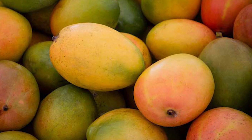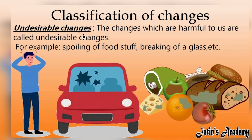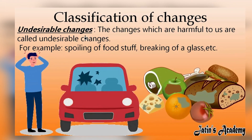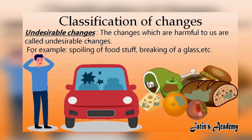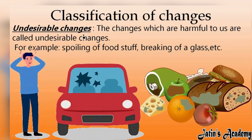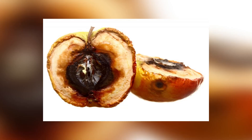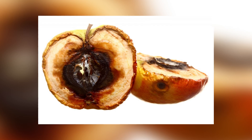For example, ripening of fruit. Undesirable changes — the changes which are harmful to our environment and not desired by us are known as undesirable changes. For example, deforestation and decaying of fruit. Next, natural changes —